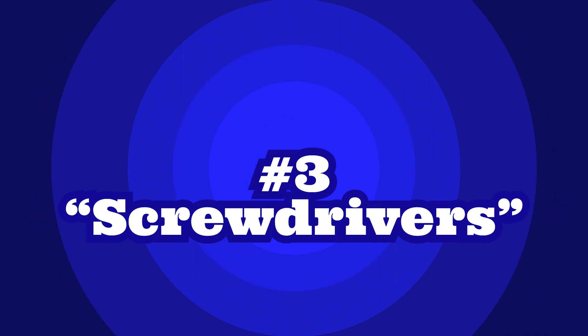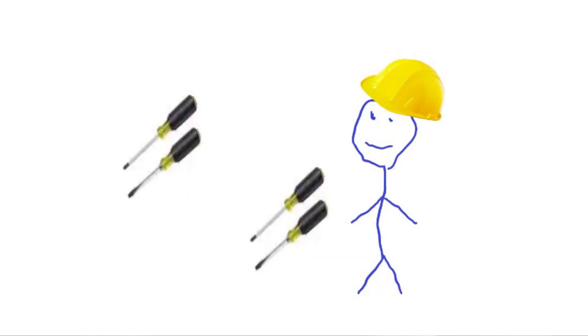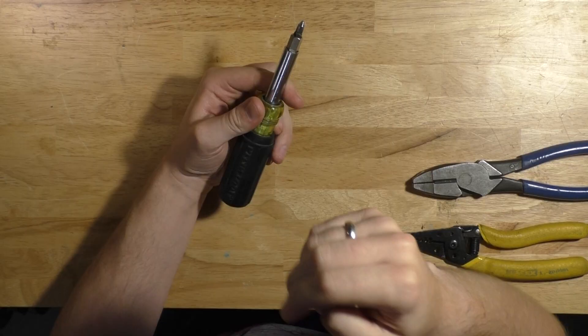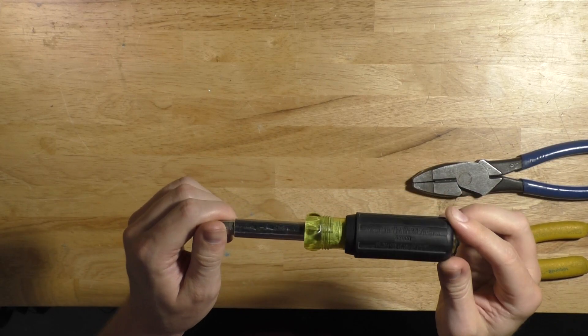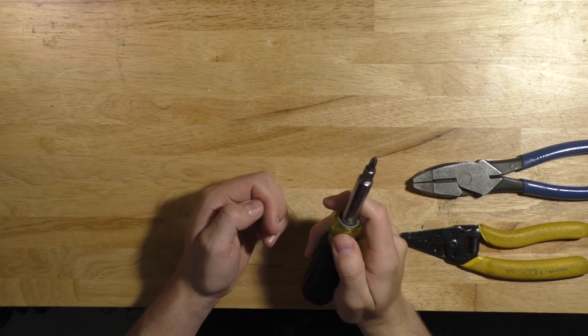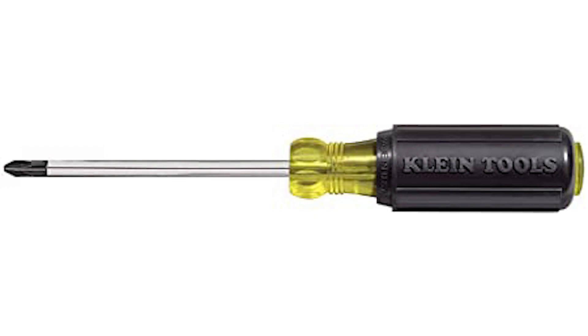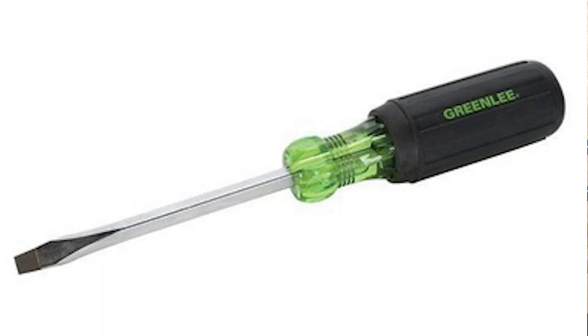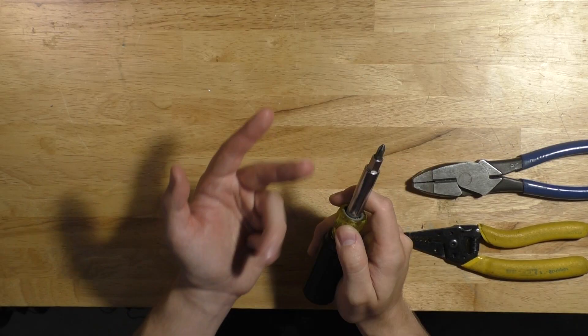Okay, third on the list is screwdrivers. Now you could buy four screwdrivers at $10 a piece or you could buy the Klein 11-in-1 screwdriver for $20 which will include the four screwdrivers that is a must-have for electricians. Those screwdrivers are the number two Phillips, a quarter inch and a three-sixteenths flat head and a number two square.